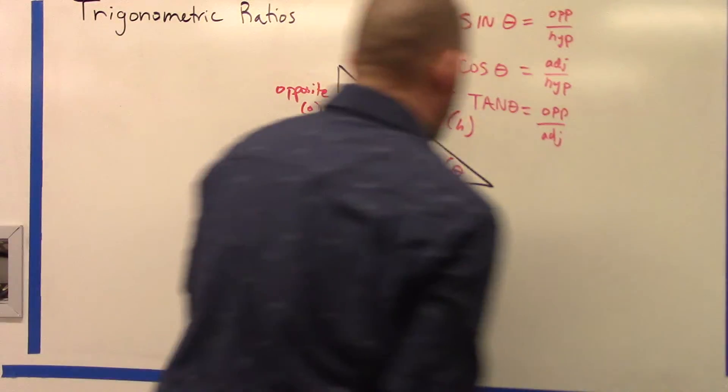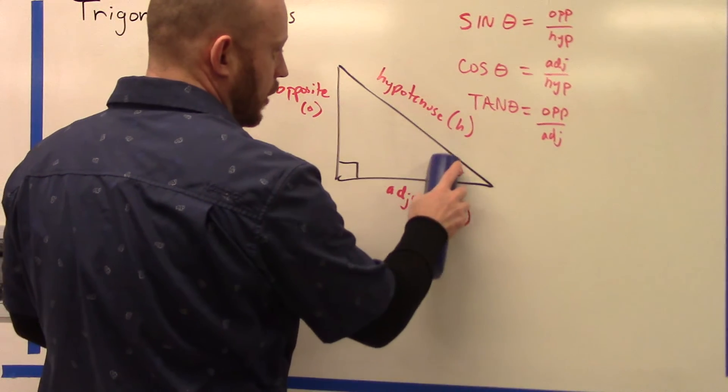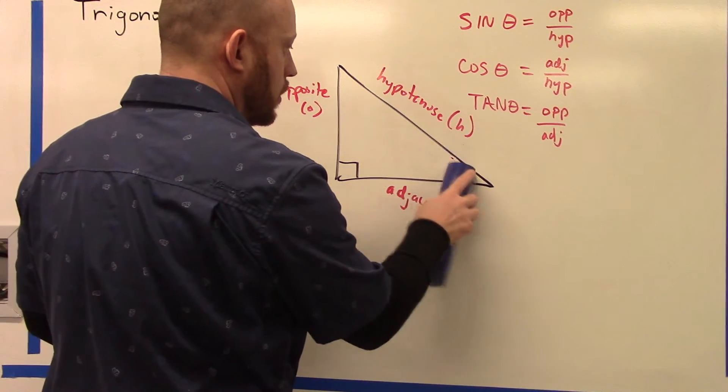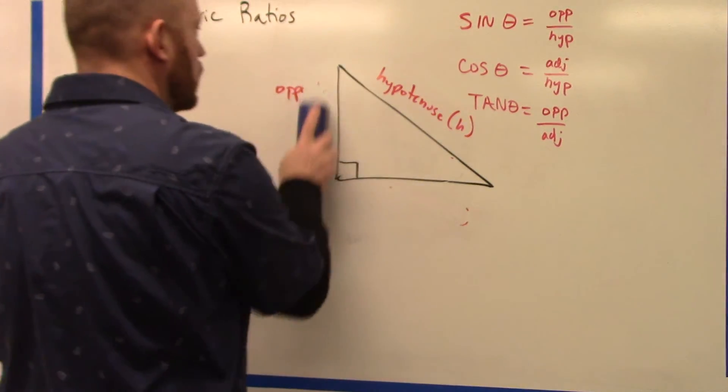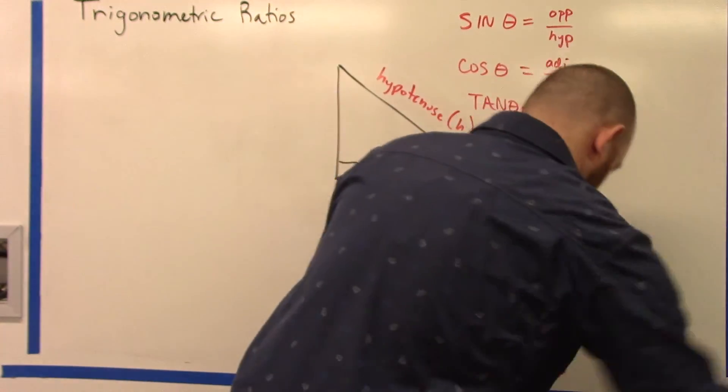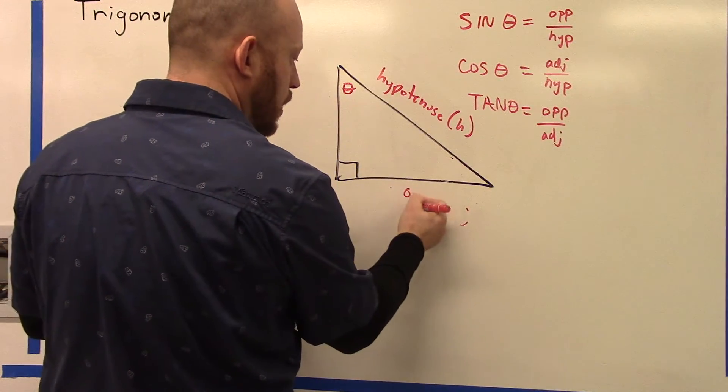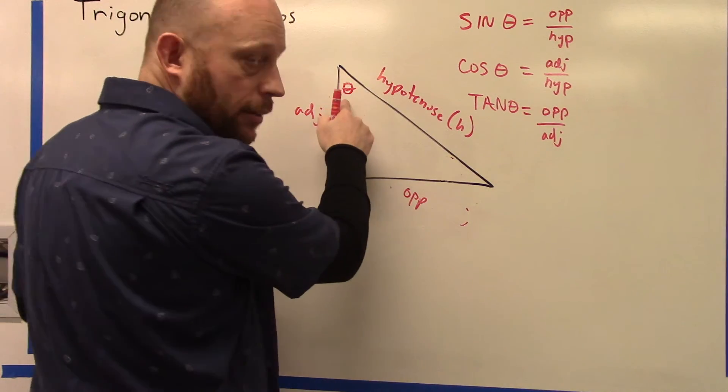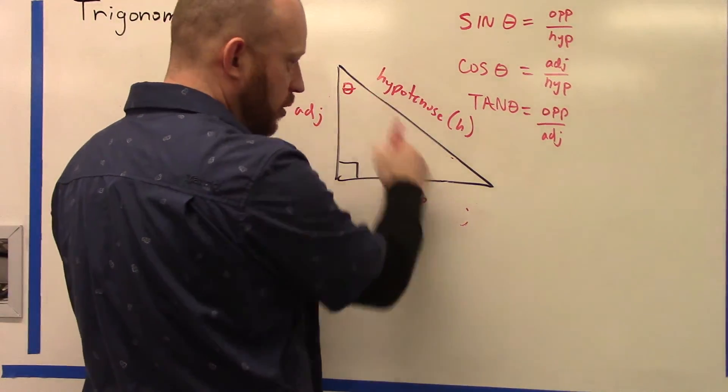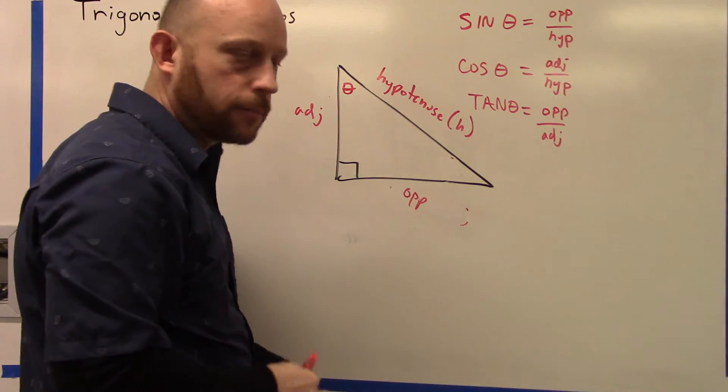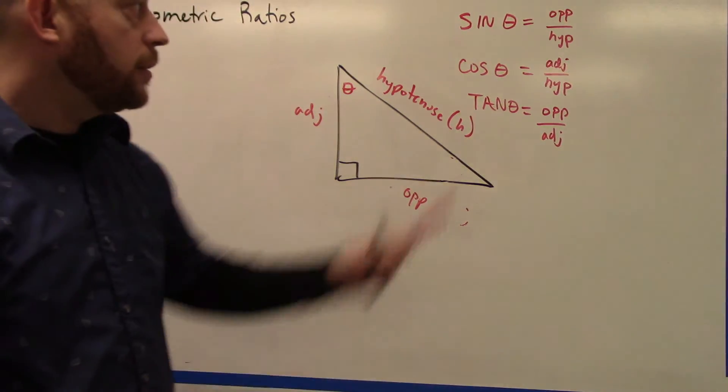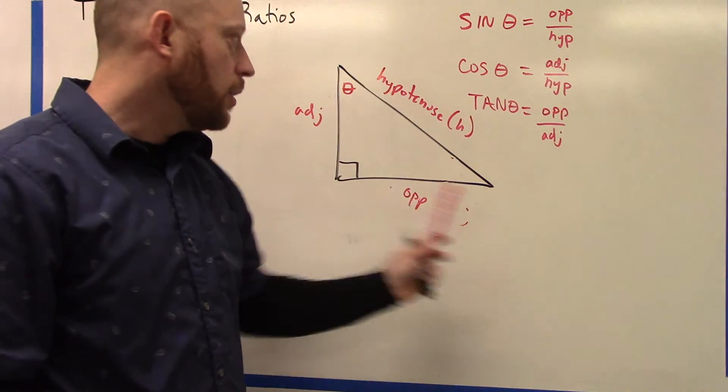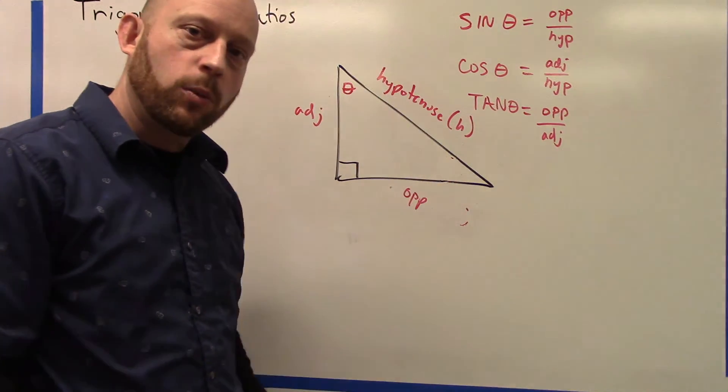So if I chose my angle to be over here instead, well now this is the opposite and this is the adjacent, because the adjacent has to be a leg of the triangle and opposite has to be across from it, not being a leg of the triangle. These are still the same—these are always the same. It just depends on which angle you're choosing to look at.